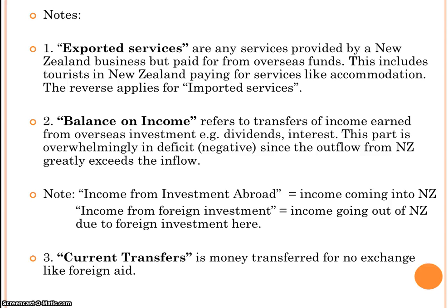The final component, the balance of current transfers, is simply money being transferred for no exchange — typically things like foreign aid. When New Zealand provides aid to Pacific Island countries, such as during natural disasters, current transfers account for the money being sent there.